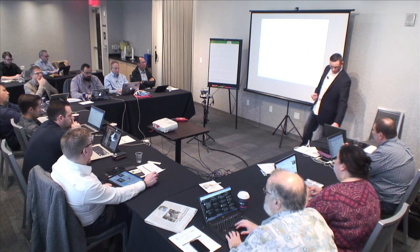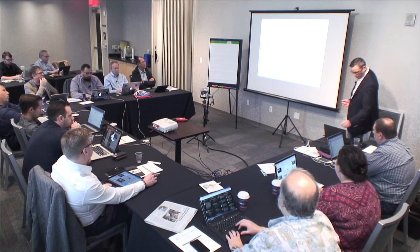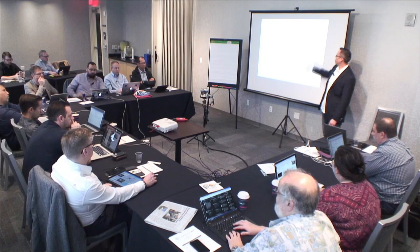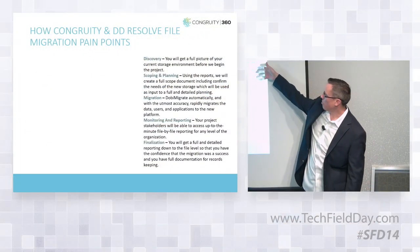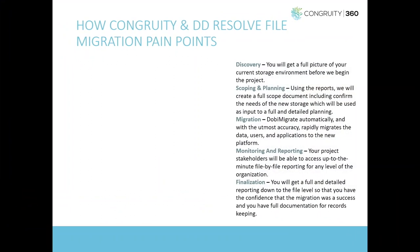On the file migration side, the process covers discovery, scoping, migration, monitoring, reporting, and finalization. Whenever you're moving data on the file side, it's important to have an assessment - you had one billion files, you moved one billion files. You don't want to move 1.2 billion or only 900,000.